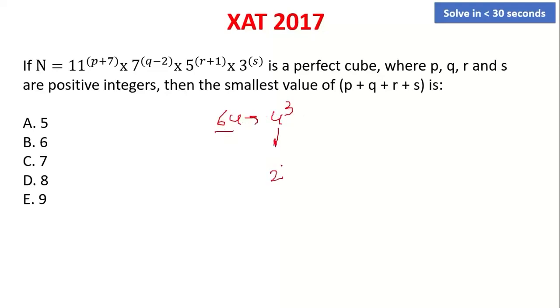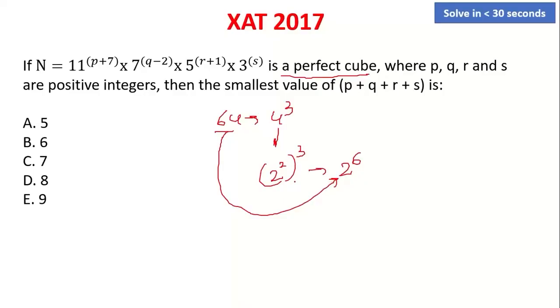4 can be written as 2 squared, so 4 cubed becomes 2 raised to the power 6. So when it is given that a number is a perfect cube and you break the number into prime factor form, then the power of each prime must be 3 or a multiple of 3.